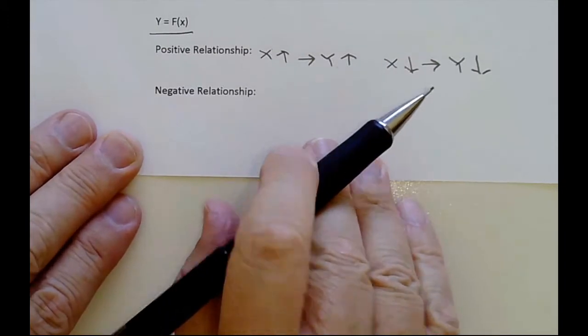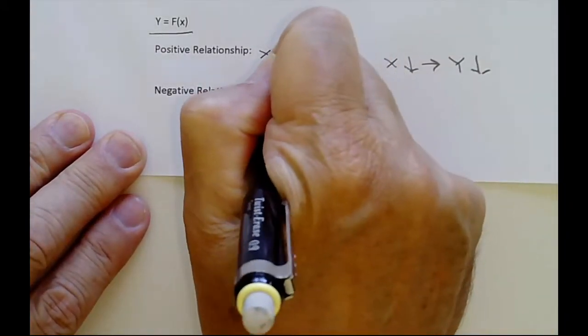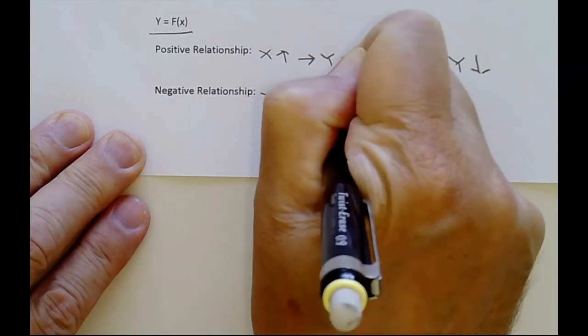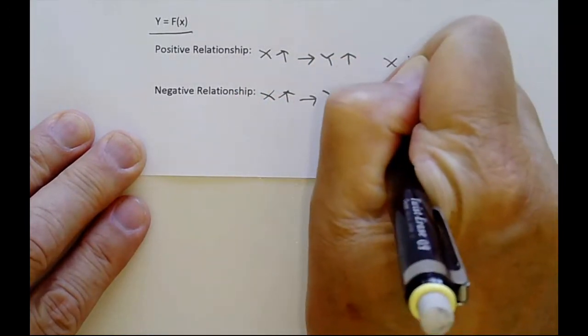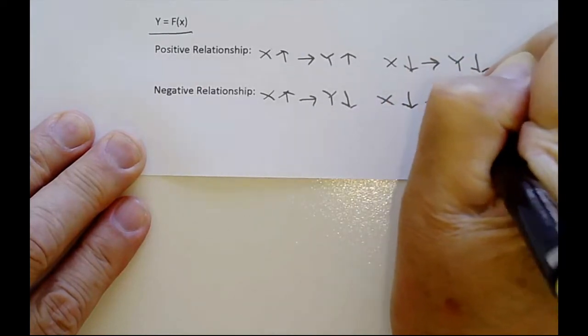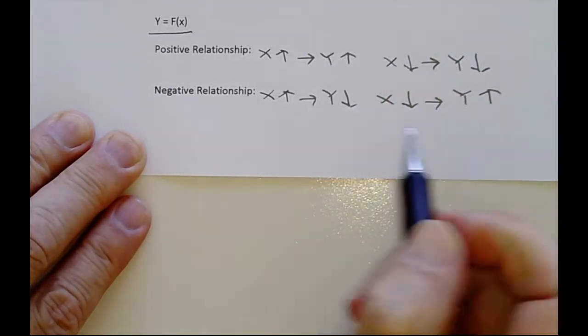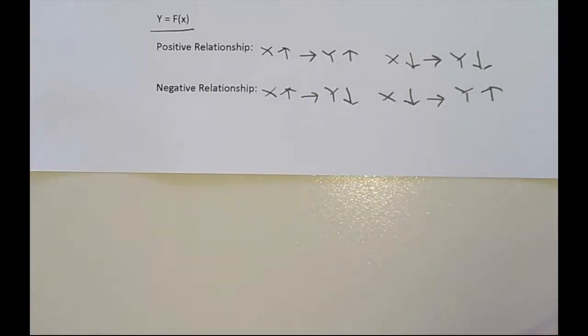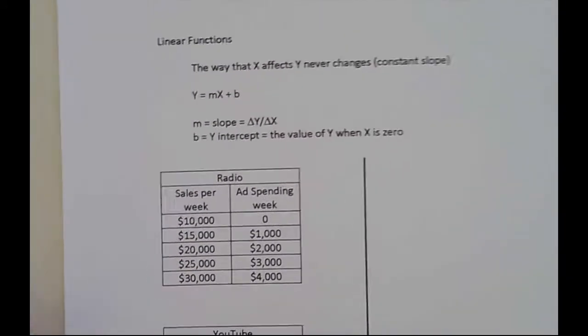In the negative relationship, if x goes up, that's going to affect y. This time it's going to drive y down. And if x goes down, that's going to cause y to go up. In our textbooks, we have lots of economic relationships, some positive, some negative.